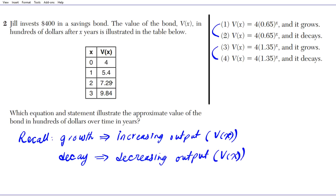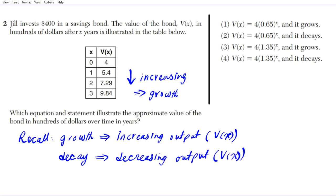The output values are 4, 5.4, 7.29, 9.84 — it's going up, it's increasing. So this is a growth scenario. That observation lets us eliminate the two options specifying decay, which are options 2 and 4.